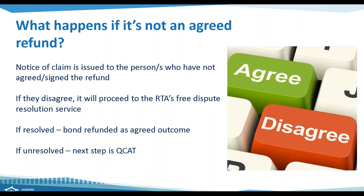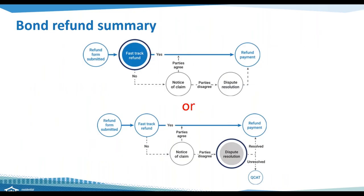The RTA has previous webinars on ending a tenancy and resolving disputes available on the RTA's website. In summary, the bond refund process works like this: if everyone agrees, it goes straight to a fast-track refund payment. If someone does not agree, the notice of claim process starts, potentially ending with dispute resolution — or if still not resolved, QCAT, where an adjudicator makes a determination. As you can see, there are several processes and time involved with each step. The quickest way is an agreement between tenants and property managers and owners up front. The RTA encourages all parties to communicate, share evidence and photos, and try to resolve any issues up front — even if the process heads to dispute resolution, you can still talk with the other party and try to resolve it.